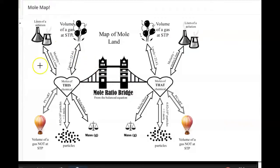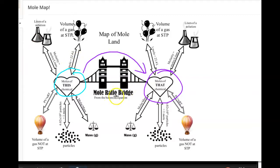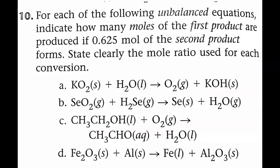Looking at our mole map, we want to go from moles of this to moles of that. In order to do that, we go over the mole bridge, and we get that from the balanced equation. This question does not give us a balanced equation — it has a skeleton equation where the coefficients are missing, so we have to write the coefficients in.